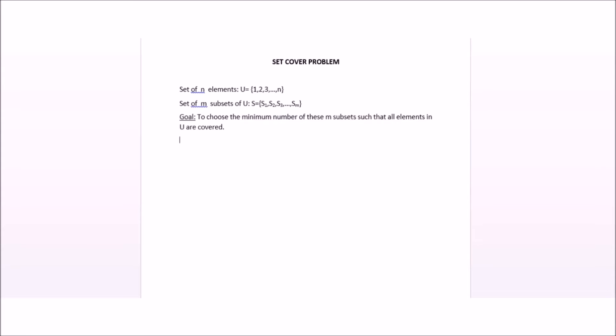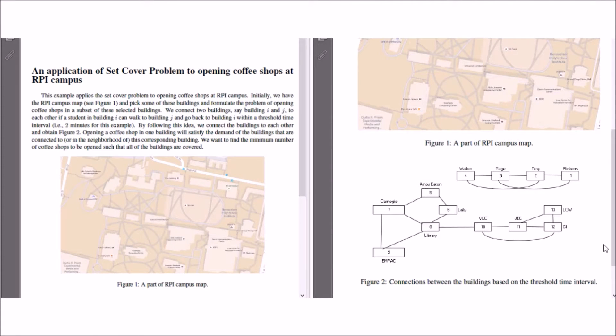This video focuses on the set cover problem and we are going to apply it to a coffee shop opening example at RPI campus. Before going through the example, I want to describe the set cover problem. We have a set of n elements represented by U and a set of m subsets of set U represented by set S. Our goal is to choose the minimum number of these subsets such that all elements in U are covered.